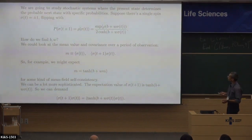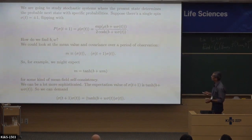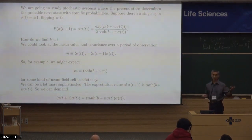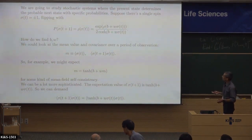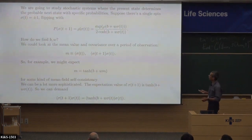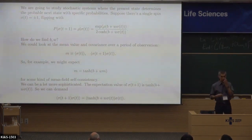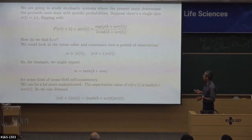Let's start with just one spin. Its state at the next time point is stochastically determined by its state at the current time. I wrote down a very general probability: if sigma at t+1 has value rho (which is plus or minus 1), and rho is +1, then the probability is e^(b + w*sigma_t) divided by 2*cosh(b + w*sigma_t). Our job is to figure out what b and w are — those are the parameters of the model.